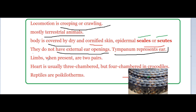When limbs are present, they are two pairs. The heart is usually three-chambered — two atria and one ventricle. In the ventricle, pure and impure blood get mixed, so the ventricle pumps mixed blood only.